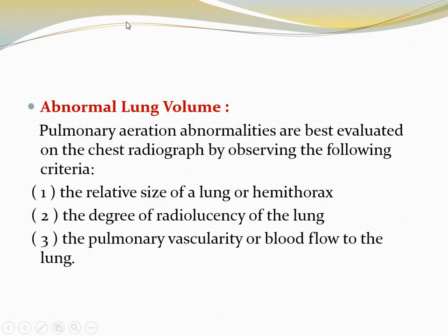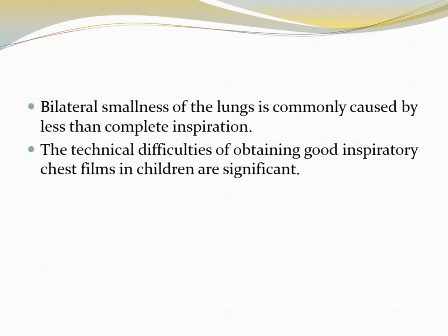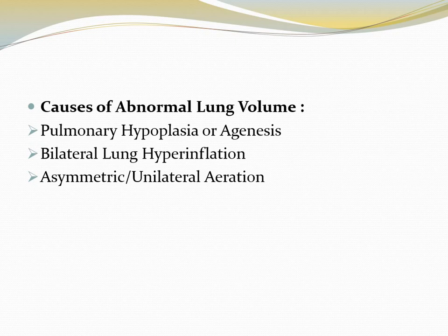Another subject is abnormal lung volume. Pulmonary aeration abnormalities are best evaluated on chest radiograph by observing the relative size of the lung or hemithorax, the degree of radiolucency of the lung, and the pulmonary vascularity or blood flow to the lung. Causes of abnormal lung volume include pulmonary hypoplasia or agenesis, bilateral lung hyperinflation, and asymmetric or unilateral aeration.